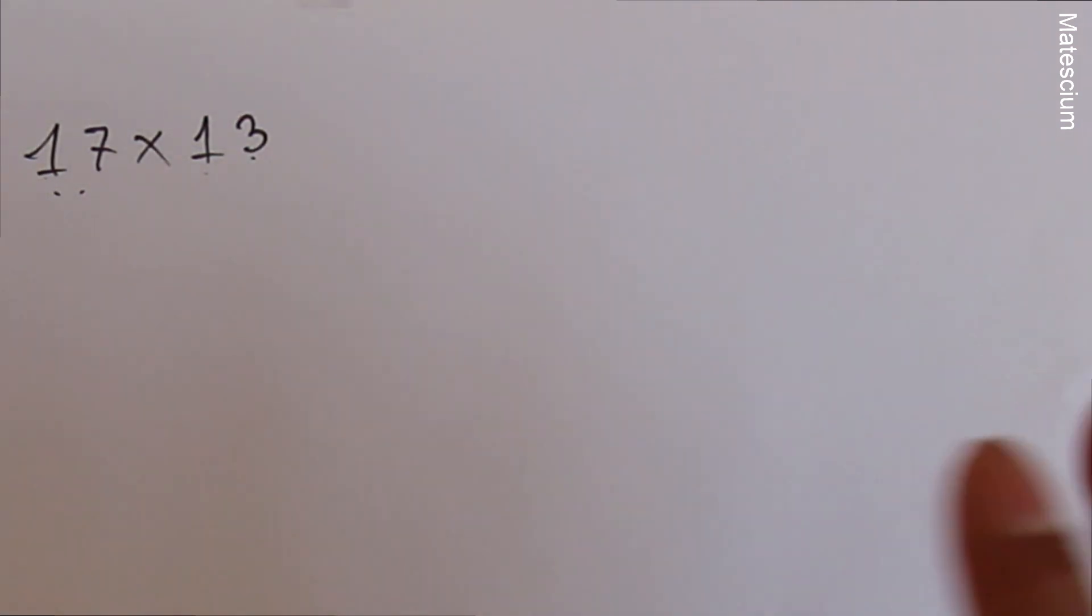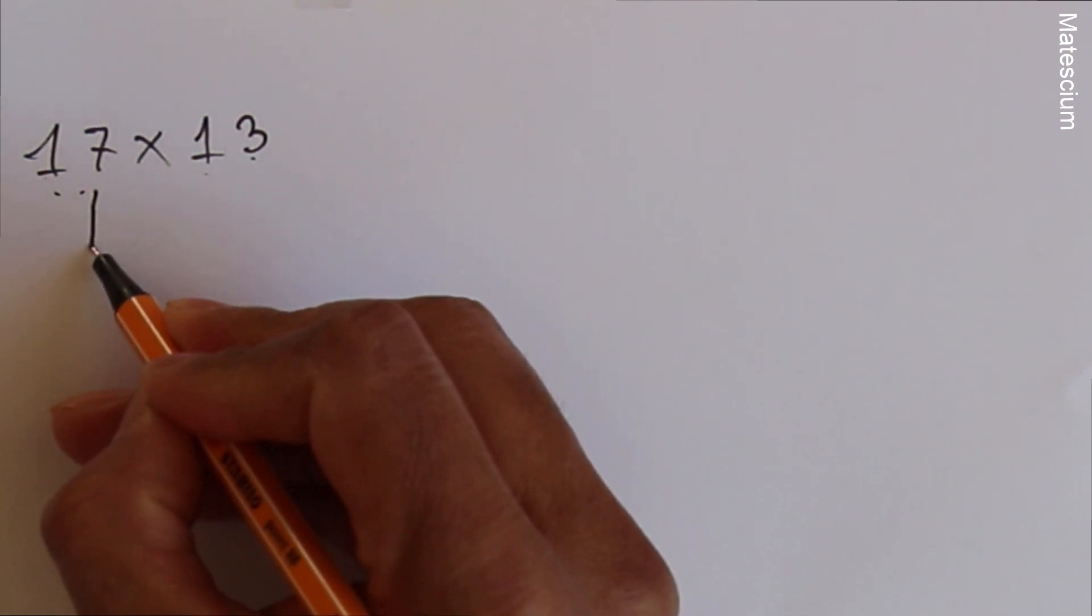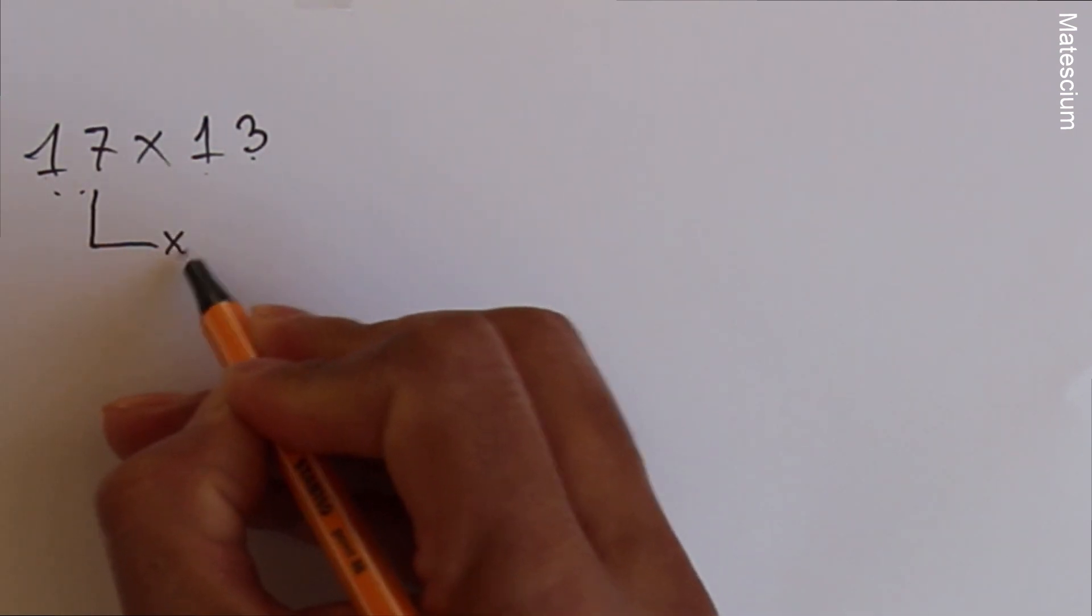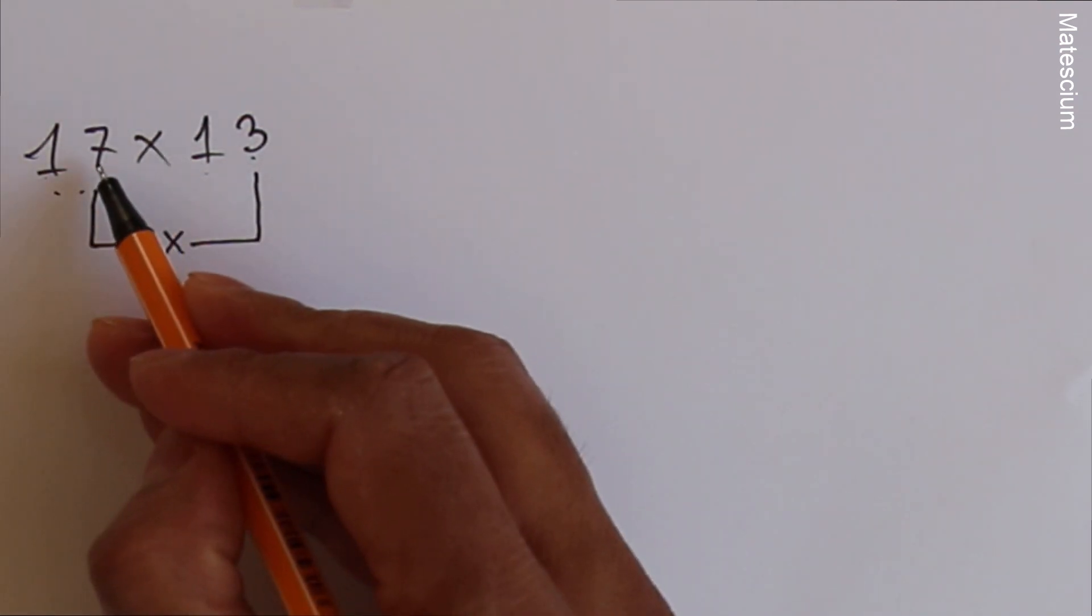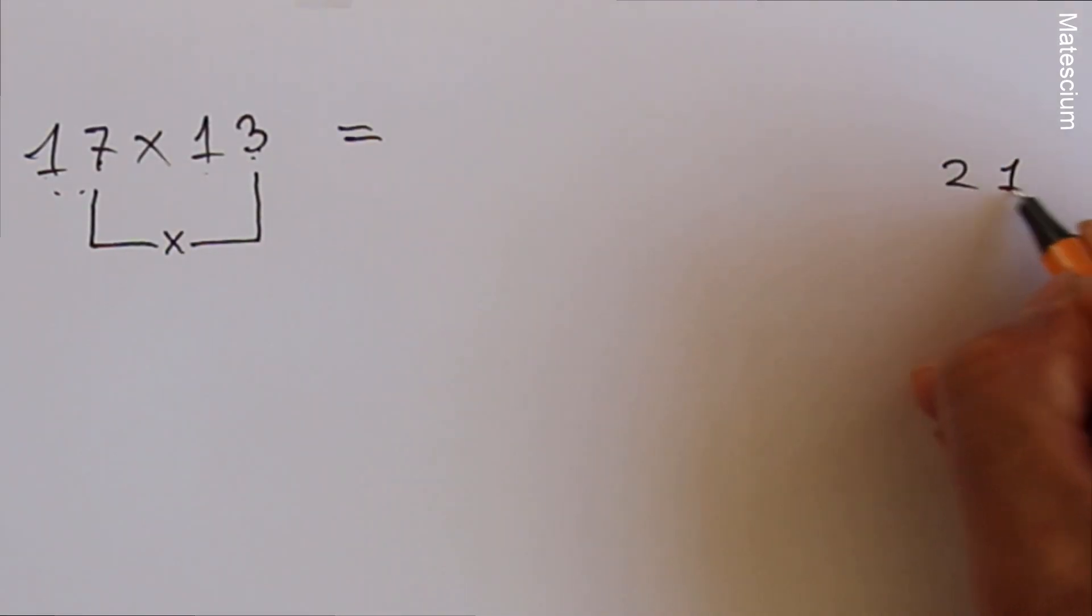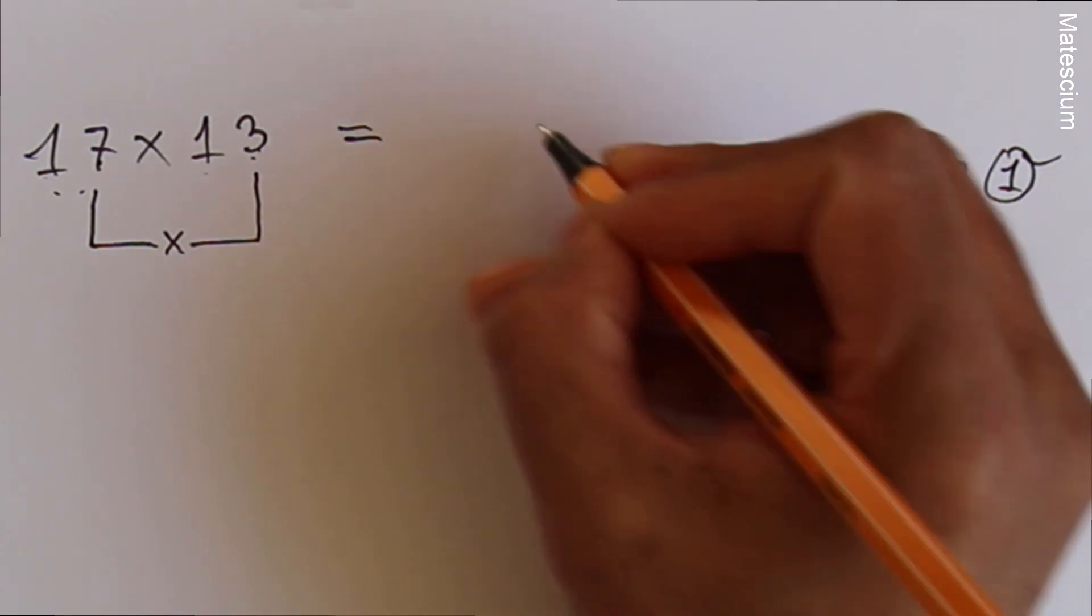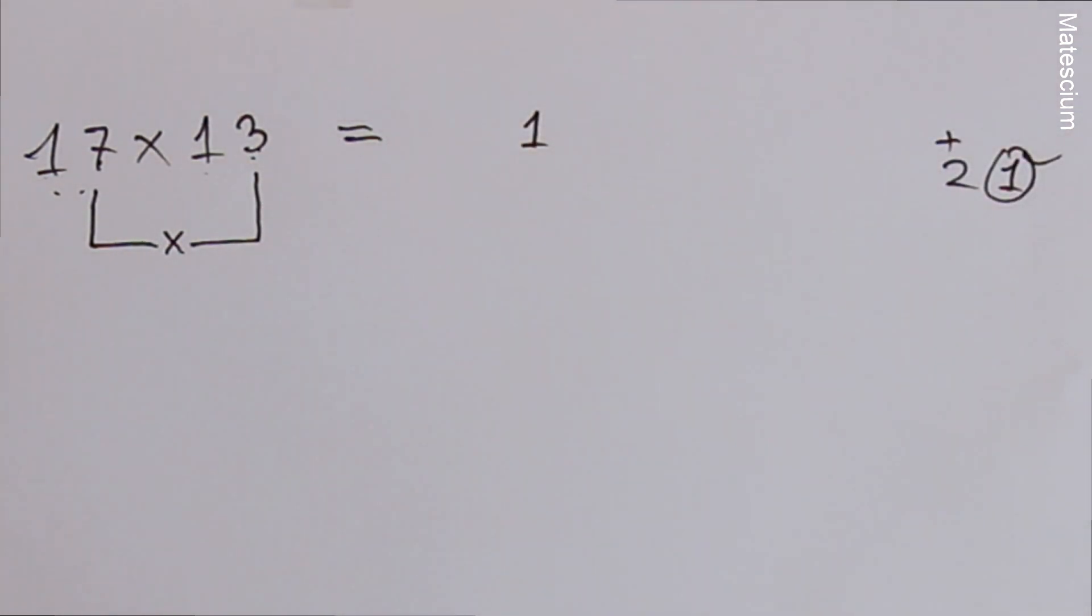I have a very simple and unique way to multiply 17 by 13. You have to consider the second digit of first number and multiply it with the second digit of last number. That means multiply 7 times 3 which equals 21. Write this 1 exactly here and 2 as a carry on your hand.